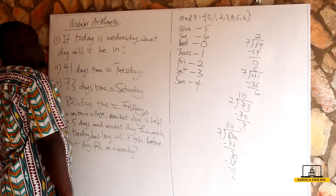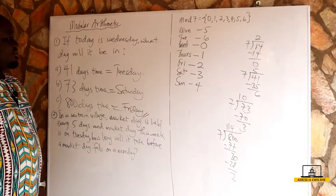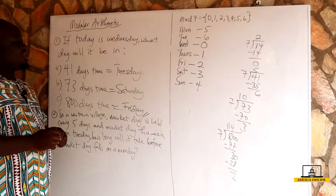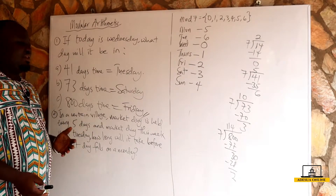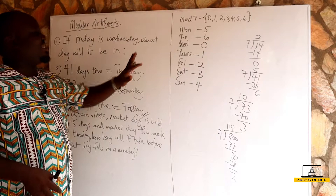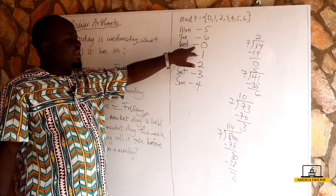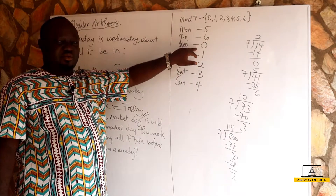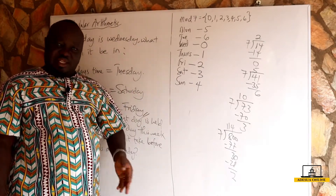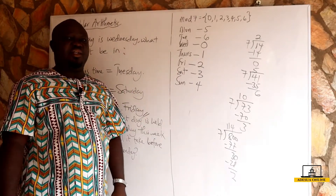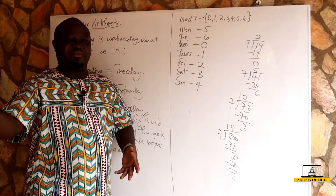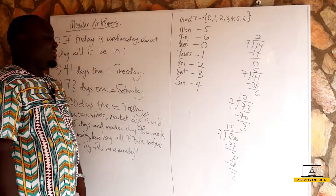Those are our answers for question one. If you are given a question that starts on Thursday, Friday, Monday, or any other day, you make that starting day zero and the following days take remainders one, two, three, and so on — just like Monday, Tuesday, Wednesday, Thursday, Friday, Saturday, Sunday in that order.